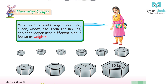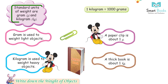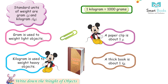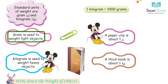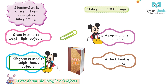When we buy fruits, vegetables, rice, sugar, wheat, etc. from the market, the shopkeeper uses different blocks known as weights. Standard units of weight are gram and kilogram. 1 kilogram is equal to 1000 grams. Gram is used to weigh light objects — a paper clip is about 1 gram. Kilogram is used to weigh heavy objects — a thick book is about 1 kilogram.